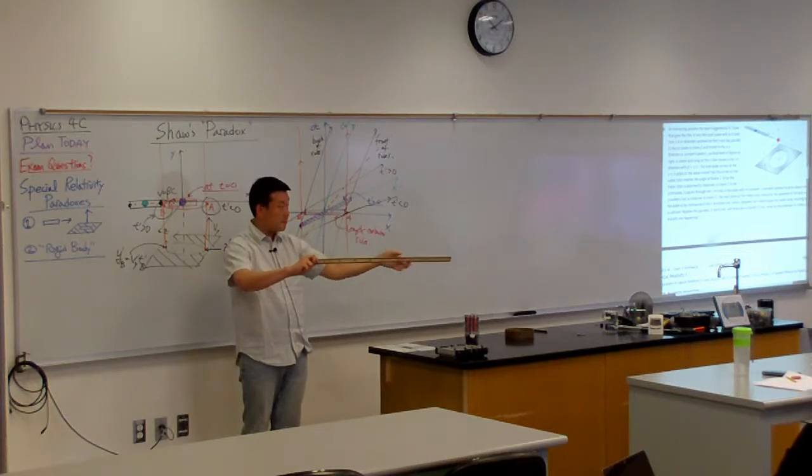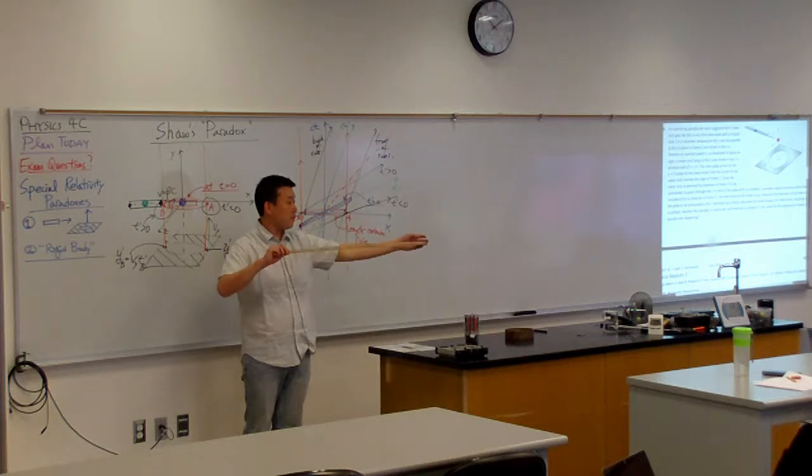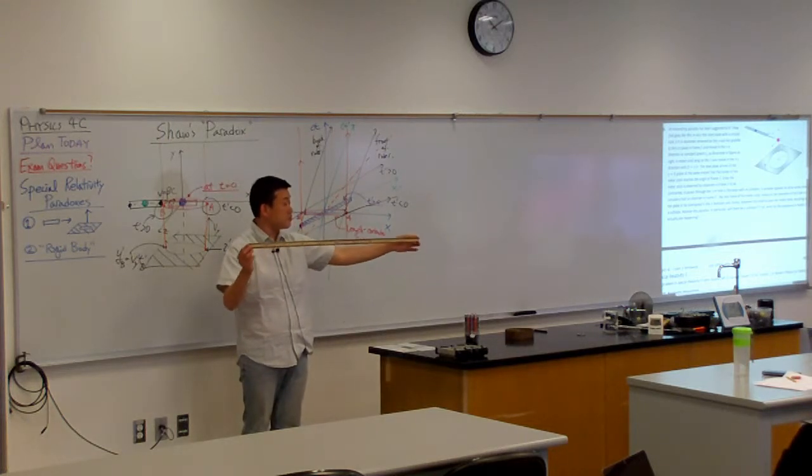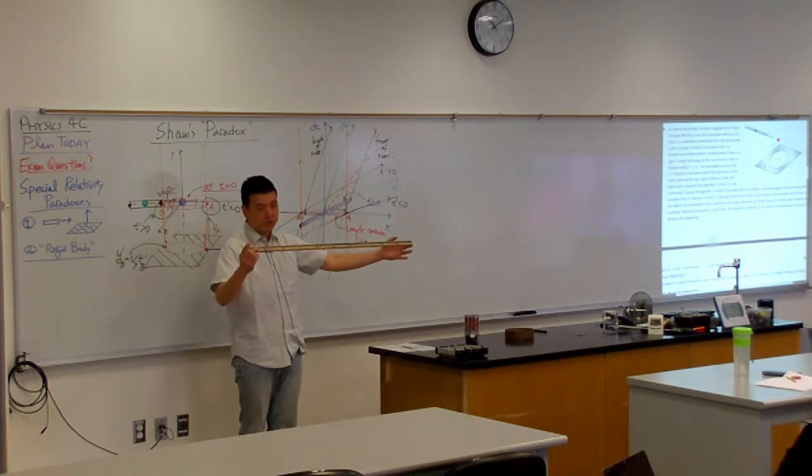Meaning whatever change I'm making at this end takes speed of light to propagate to this end. And for extended bodies, what it comes down to is there's no such thing as a rigid body in special relativity. All things are not rigid in special relativity.